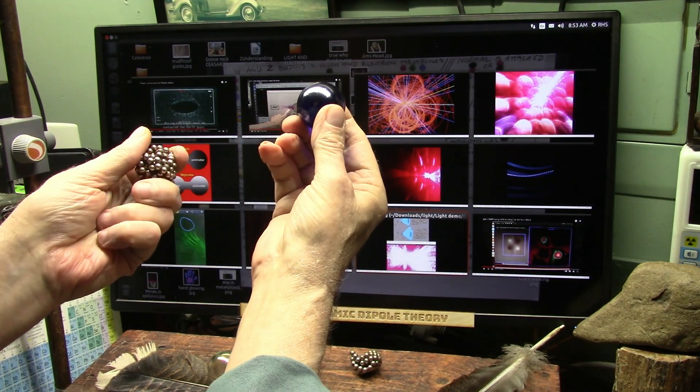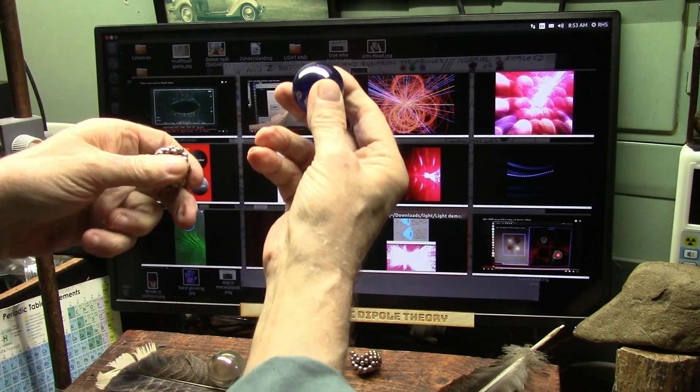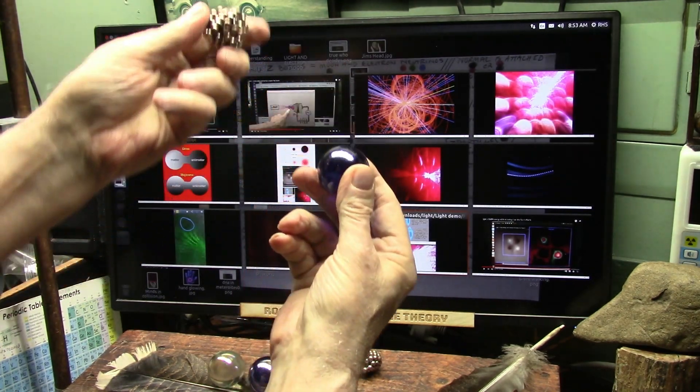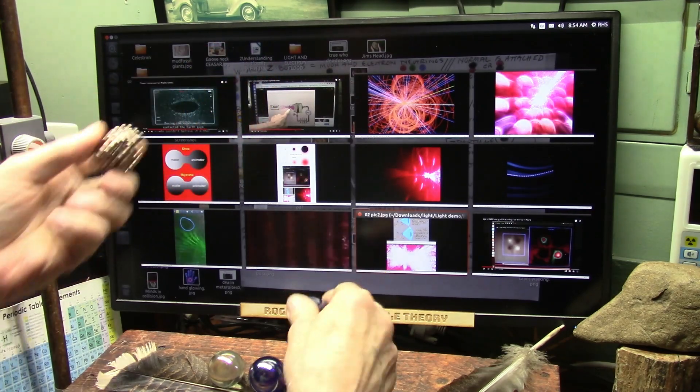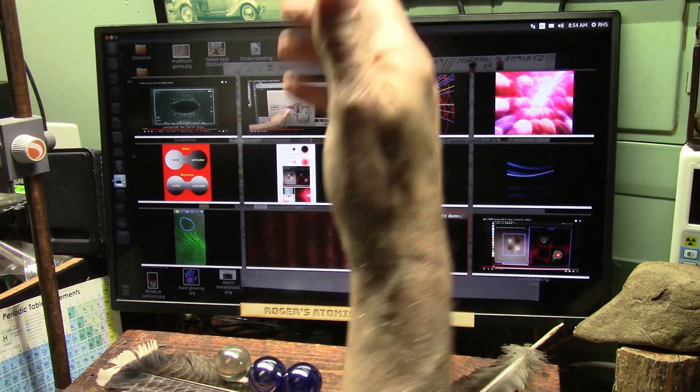A proton is not a big ball like this with a couple of quarks jiggling around inside. It's all made of dipoles, and this is my dipole flood theory.